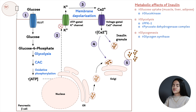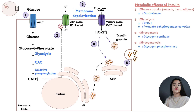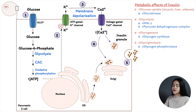If glycogen synthesis is activated, glycogen breakdown is inhibited. Glycogen phosphorylase, the enzyme involved in glycogen breakdown, will be inhibited.